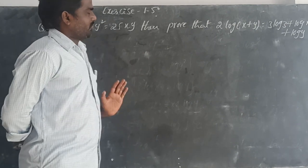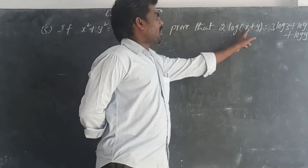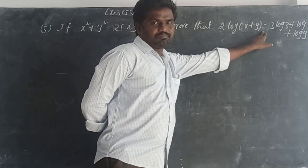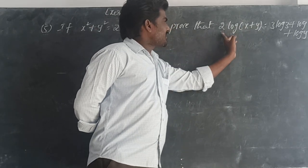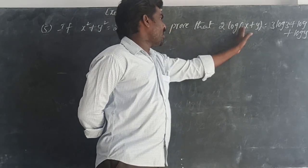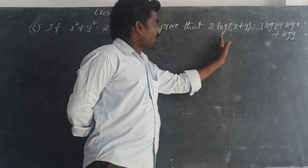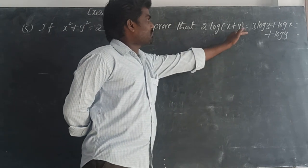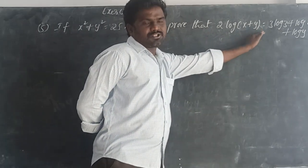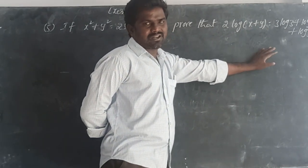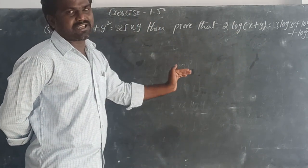How we can prove? Here the right side is 2 log of (x+y), which we can write as log of (x+y) whole square. So (x+y) whole square expands to x squared plus y squared plus 2xy.